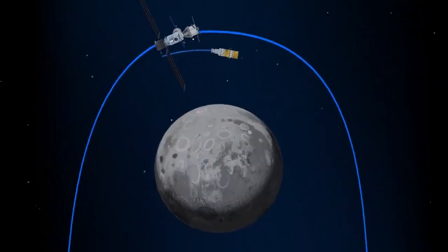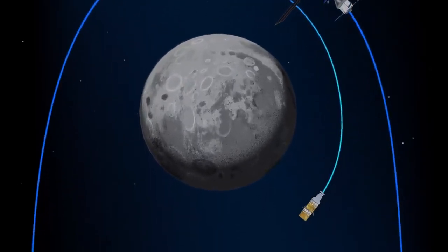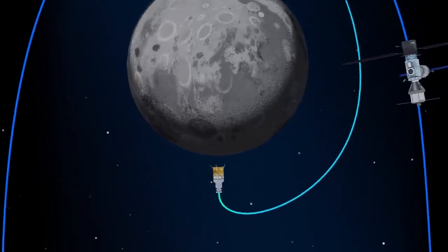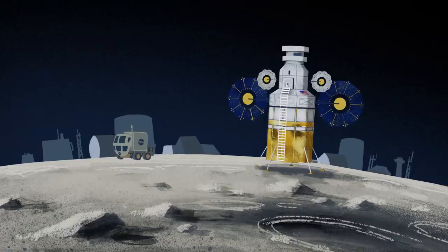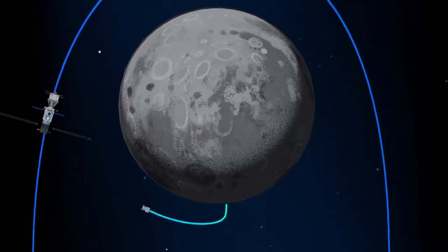The lunar lander system itself is built for three unique steps. Descending from the halo orbit of Gateway down to a low lunar orbit, descending from low lunar orbit to the surface, and once the lunar mission is complete, launching from the surface of the Moon and ascending all the way back to the orbiting Gateway.